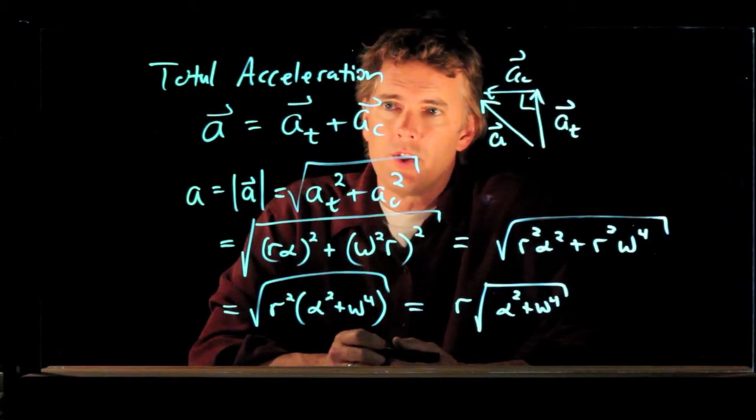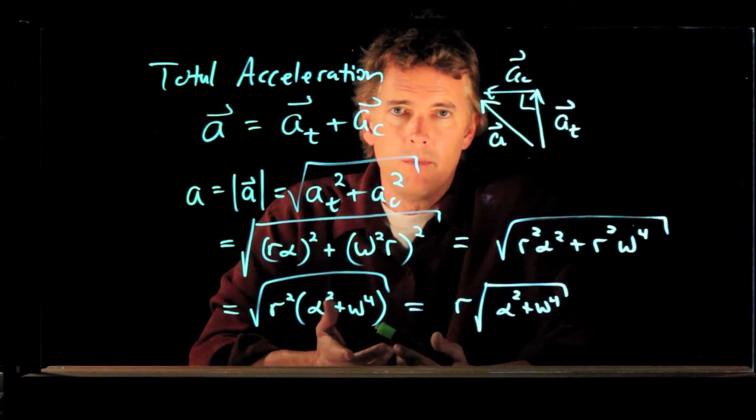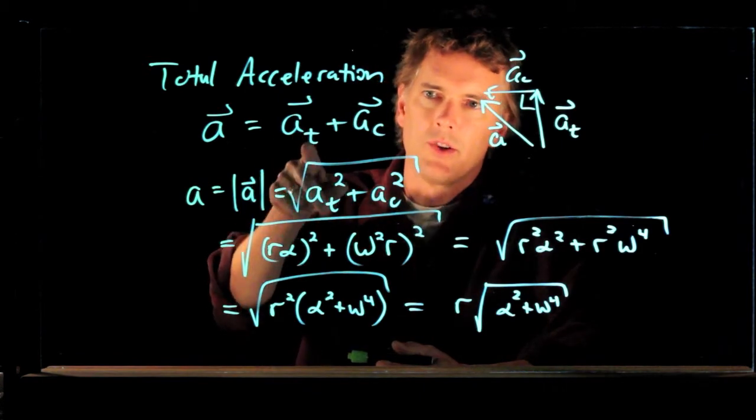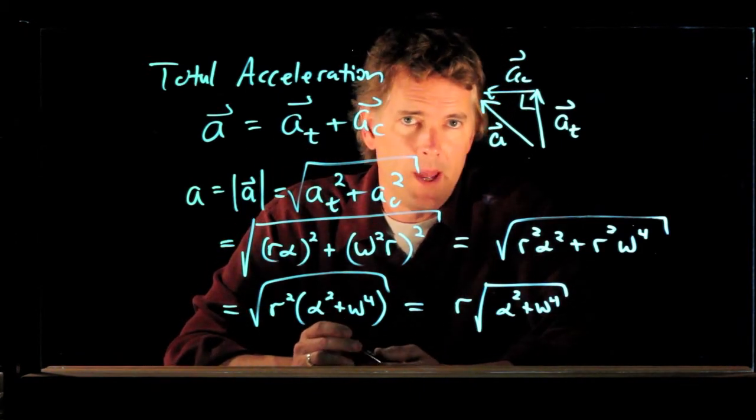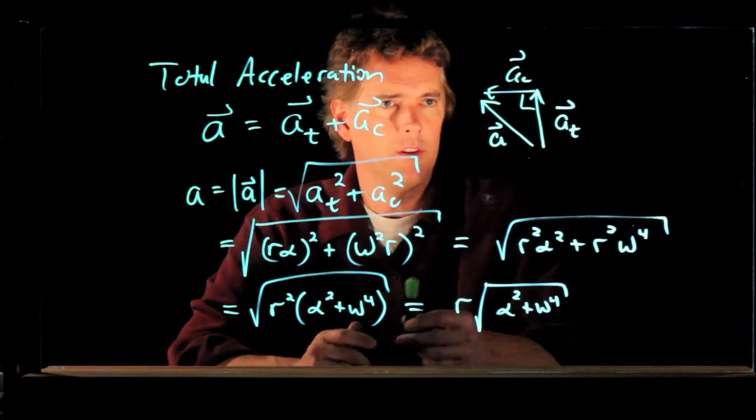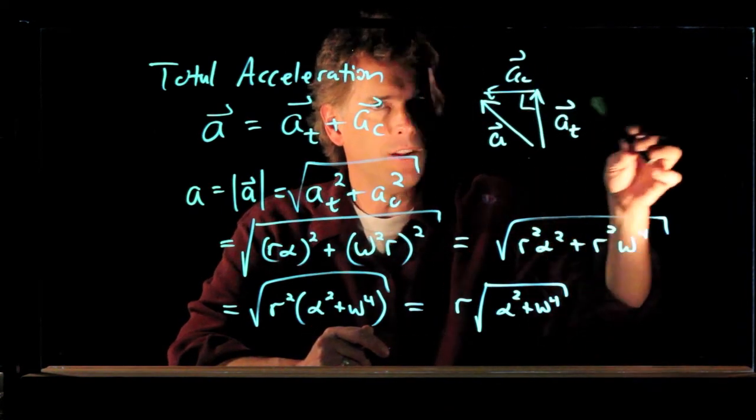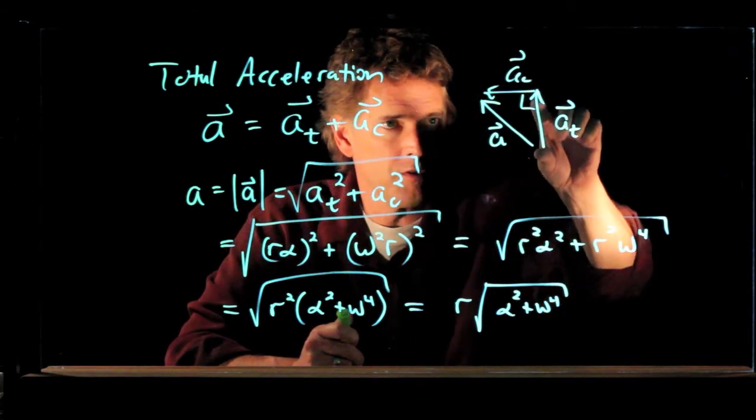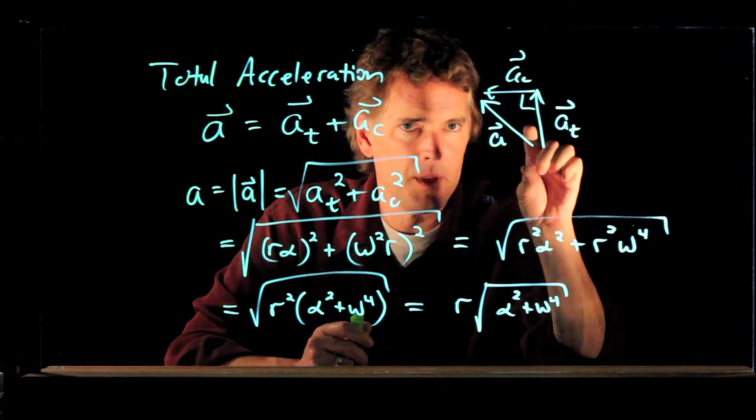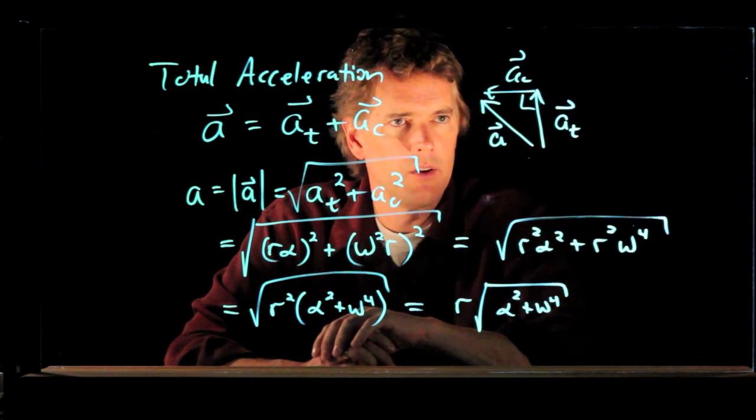So the total acceleration is just the sum of the tangential acceleration plus the centripetal acceleration. Those are vectors, and so we have to add them as vectors. a t in our picture was up, a c was towards the center of the circle.